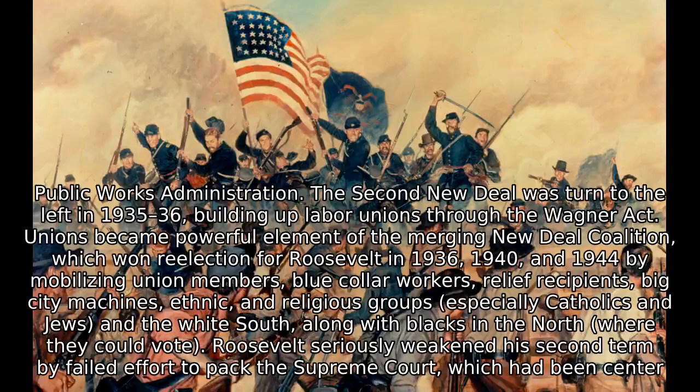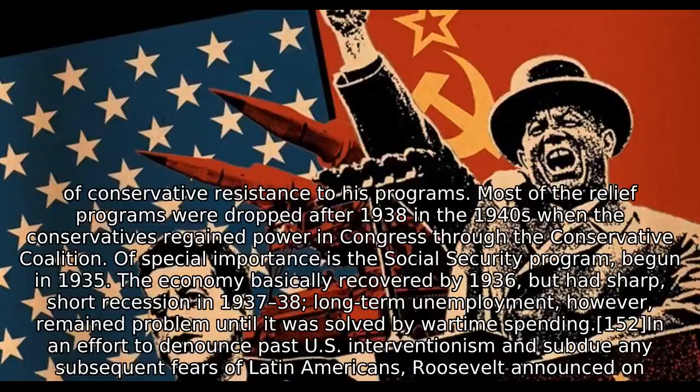Unions became a powerful element of the New Deal coalition, winning re-election for Roosevelt in 1936, 1940, and 1944 by mobilizing union members, blue-collar workers, relief recipients, big city machines, ethnic and religious groups especially Catholics and Jews, and the white South, along with blacks in the North where they could vote. Roosevelt seriously weakened his second term by a failed effort to pack the Supreme Court. Of special importance is the Social Security Program, begun in 1935. The economy basically recovered by 1936 but had a sharp, short recession in 1937–38. Long-term unemployment remained a problem until it was solved by wartime spending.